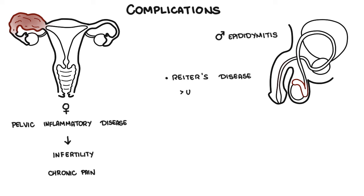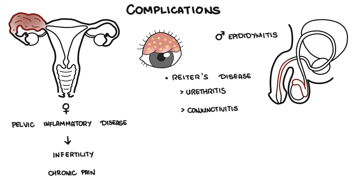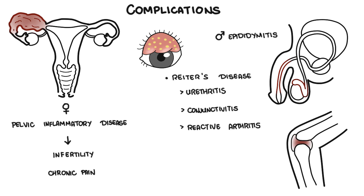The classic triad of Reiter's disease is urethritis, conjunctivitis, and reactive arthritis. Chlamydia can also often accompany another infection — gonorrhea — so it is important to look for this. Proctitis and pharyngitis occur in both males and females. Reinfection by chlamydia is common, and so once treated, patients should be tested again to make sure they are clear of the infection.